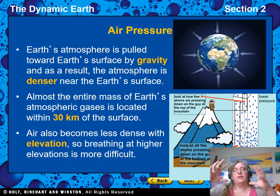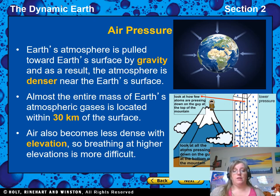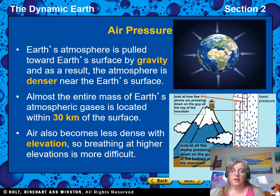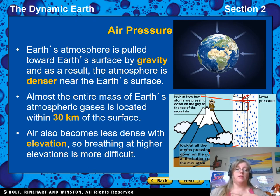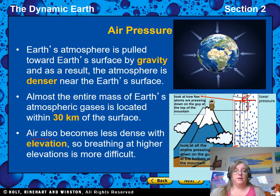The atmosphere is denser or thicker near the surface than it is further out. You can see in this diagram that air molecules are very thick at the bottom of the mountain and very thin at the top. That's why the higher up in the mountains you go — especially high mountains like the Himalayas or the Rockies — the harder it is to breathe, because the air becomes less dense with elevation.